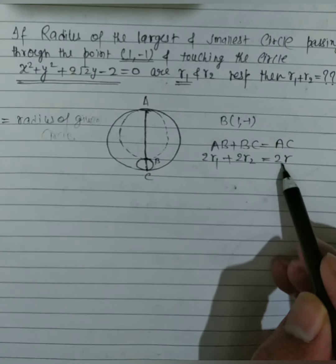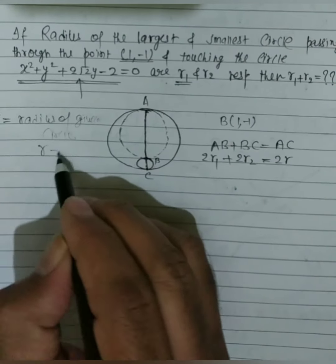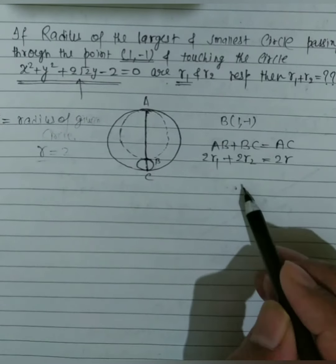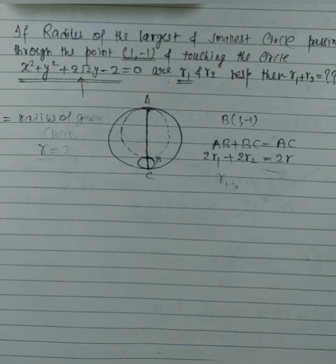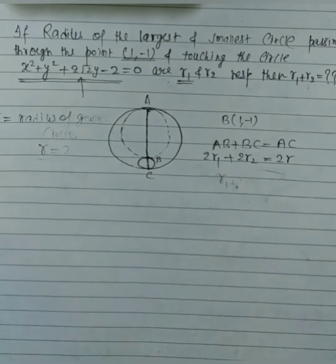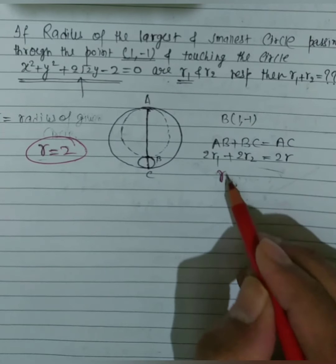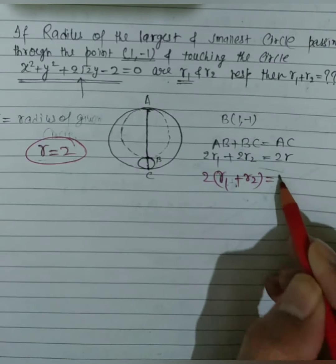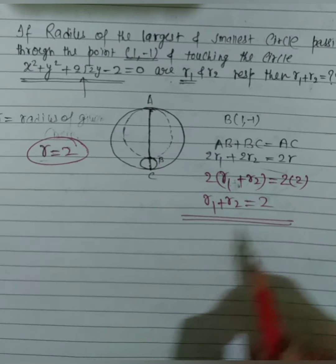The radius of the given circle is R = 2, so 2R = 4. Therefore, 2R₁ + 2R₂ = 4, giving R₁ + R₂ = 2.